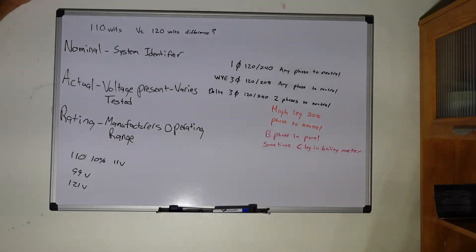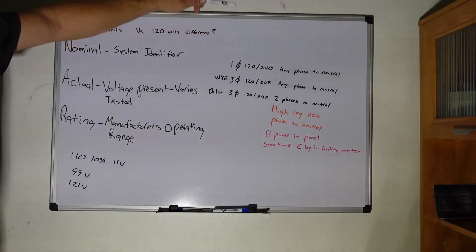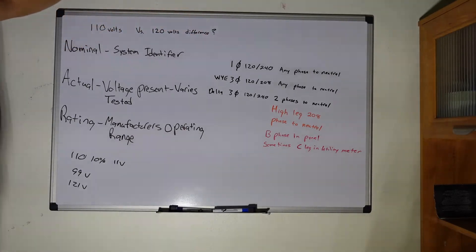There's a few different ways that you can get it. Your typical residential will be 110 single phase 120/240 system, and you can take either one of those phases from each leg to neutral will give you 120 on that system.